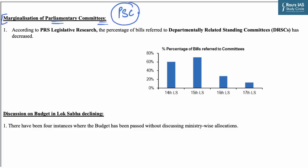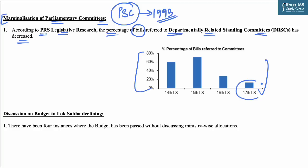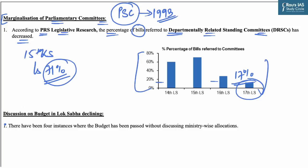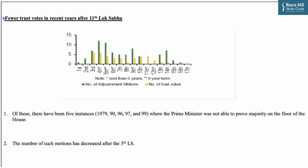Parliamentary standing committees were created in 1993 to assist Parliament in its legislative and financial business. However, according to PRS Legislative Research, the percentage of bills referred to departmentally related standing committees has decreased significantly — in the 17th Lok Sabha it reached only 17%, whereas in the 15th Lok Sabha it was 71%. There has also been a decline in discussion on the budget in Lok Sabha; since 1952, there have been four instances where the budget was passed without discussing ministry-wise allocations.